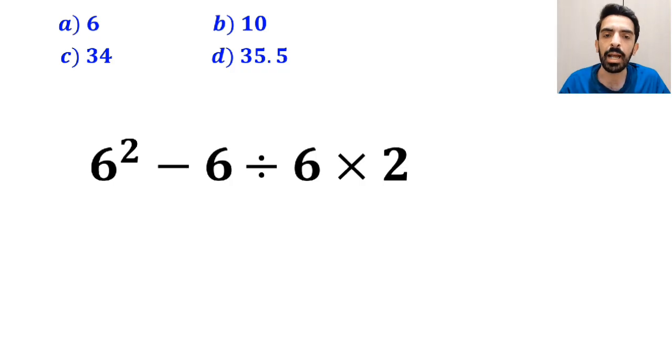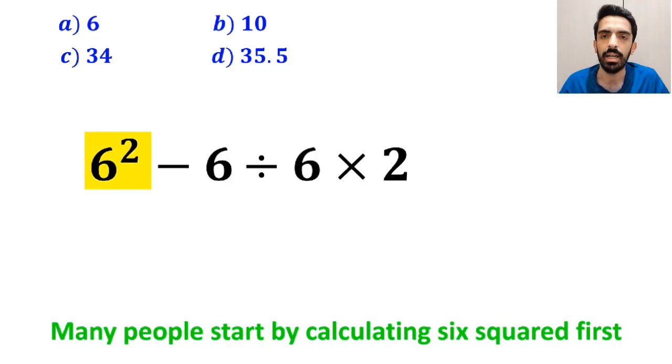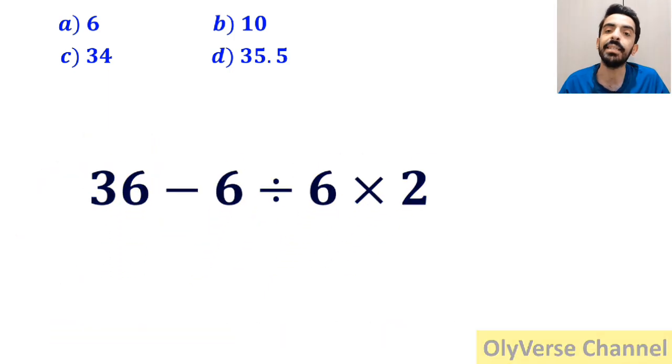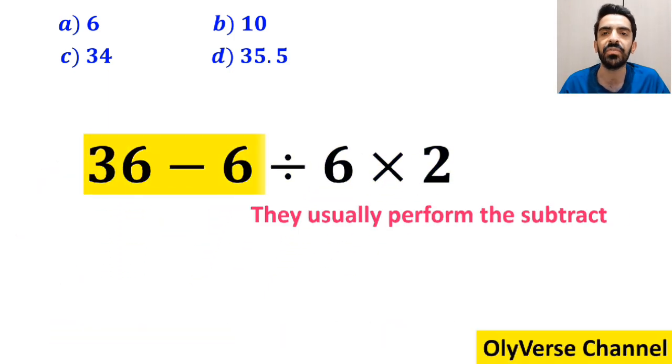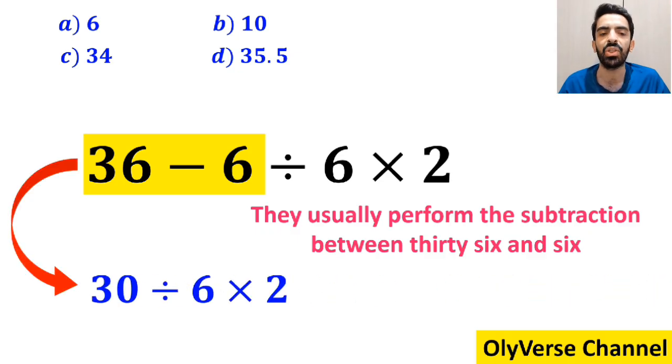To solve this problem, many people start by calculating 6 squared first, and instead of the original expression, they rewrite it as 36 minus 6 divided by 6 times 2. In the next step, they usually perform the subtraction between 36 and 6, and simplify this expression to 30 divided by 6 times 2.